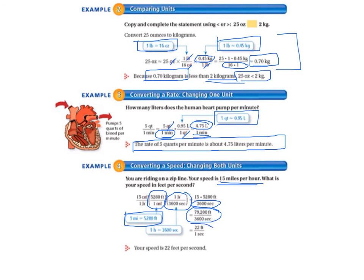And then you finally divide that, and it's 79,200 feet per 3,600 seconds, which equals 22 feet per second. So your speed is 22 feet per second. That was a tough problem.